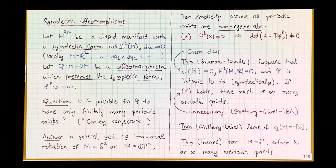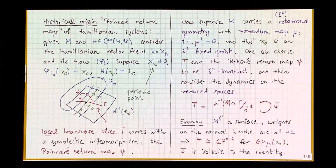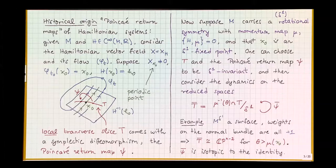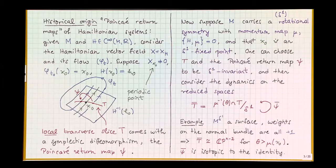We have a symplectic manifold M, which no longer has to be closed, and a Hamiltonian function. To any function we associate a Hamiltonian vector field X and study its flow in continuous time. The fixed points of the flow correspond to critical points of the function. The next simplest thing is a periodic flow line: you start at X0, which is not a fixed point, start moving, and after some time T0 come back to X0. Poincaré proposed studying the dynamics near such periodic points.